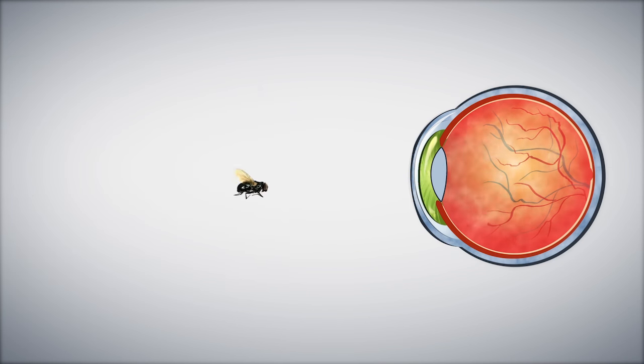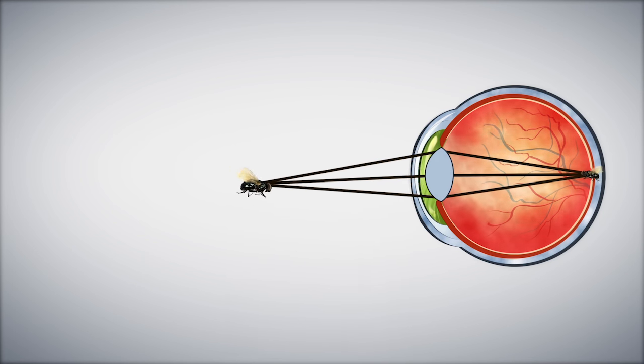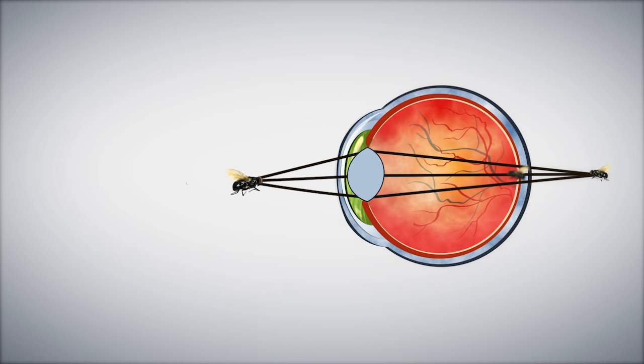If an object like this little fly moves closer to your eyes and you want to keep it in focus, your lens bends and breaks the light differently. To keep the fly in focus, all the light from a single point on the insect needs to be focused on a single point in the back of your eyes. If the fly comes too close, the lens cannot bend enough and you lose focus.